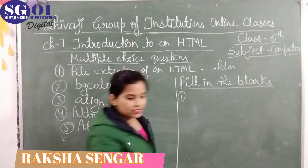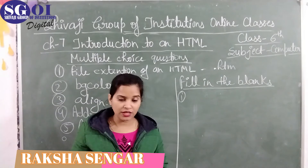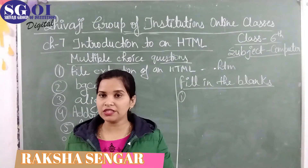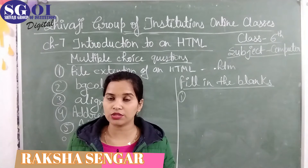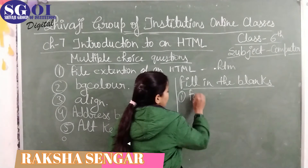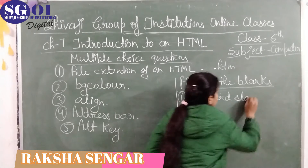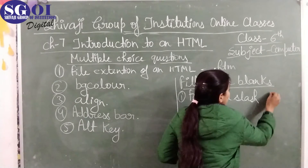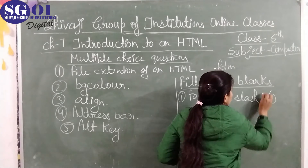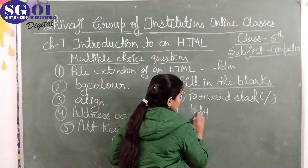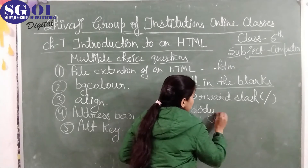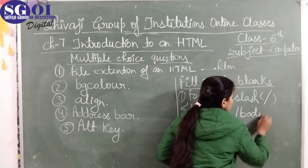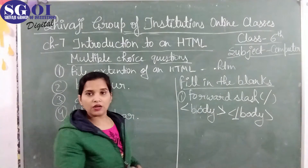Next is fill in the blanks. The first question is: a closing tag is created by placing a dash in front of an opening tag. The answer is forward slash. A closing tag uses a forward slash. For example, with the body tag, the opening tag is the body tag, and the closing tag uses a forward slash — that is the closing tag.